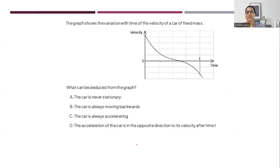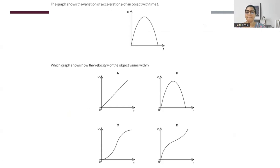Pause the video, try to solve this example and come back for the answer. If you have seen all the options very carefully, the only option that works here is that the car is always accelerating. Take one more example — the hint is that the slope of the answer is the question. Look for the slope in all the options that gives you the question back. The option is C.